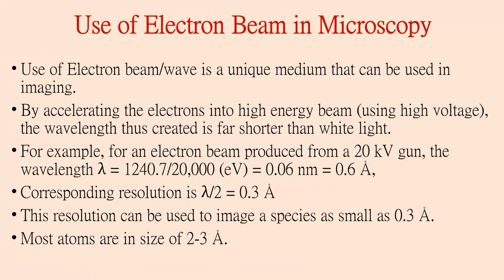Thereby we achieve maximum resolution possible in electron microscopy. For example, for an electron beam produced from a 20 kilovolt gun, the wavelength is around 0.006 nanometers. The corresponding resolution, lambda divided by 2 times NA with numerical aperture of 1, is around 0.3 angstroms or 0.03 nanometers. This resolution can be used to image species as small as 0.03 nanometers or 0.3 angstrom units. Most atoms are in the size of 2 to 3 angstroms.